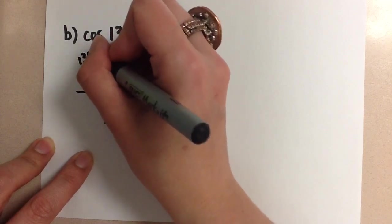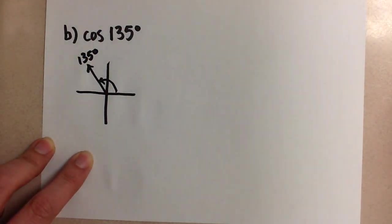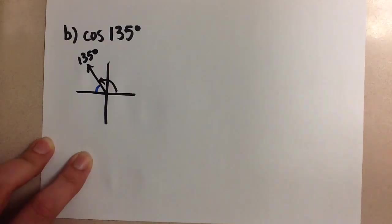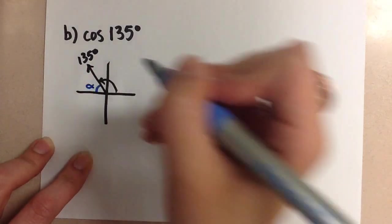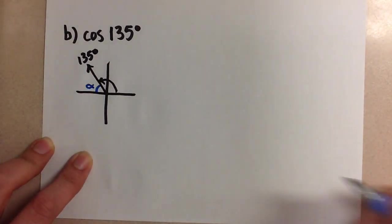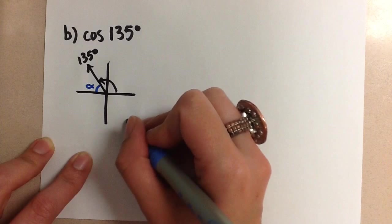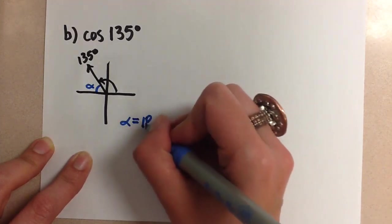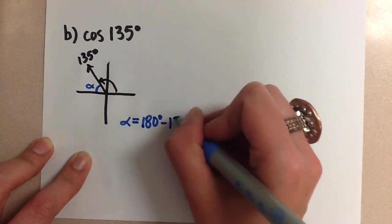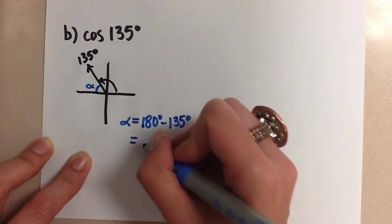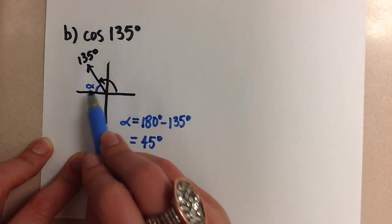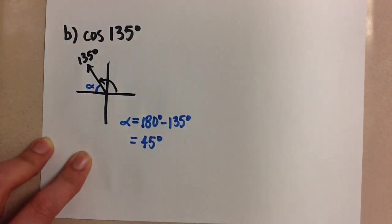So there's 135 degrees. We are interested in finding the related acute angle, and that is this angle here. Again, so we'll label that angle alpha, and to find the related acute angle in the second quadrant we do 180 degrees minus 135 degrees, and we get 45 degrees for that angle alpha, which is the related acute angle.